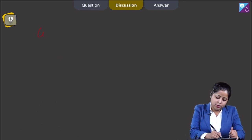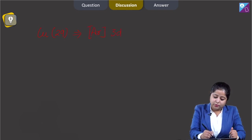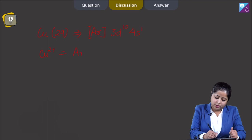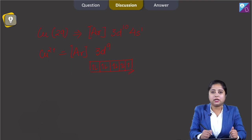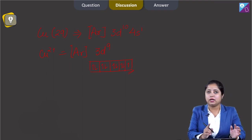Cu has atomic number 29 with electronic configuration [Ar] 3d10 4s1. In the 2+ oxidation state, Cu2+ has configuration [Ar] 3d9. Drawing the orbital diagram, with 9 electrons in the d orbital, there is clearly one unpaired electron.